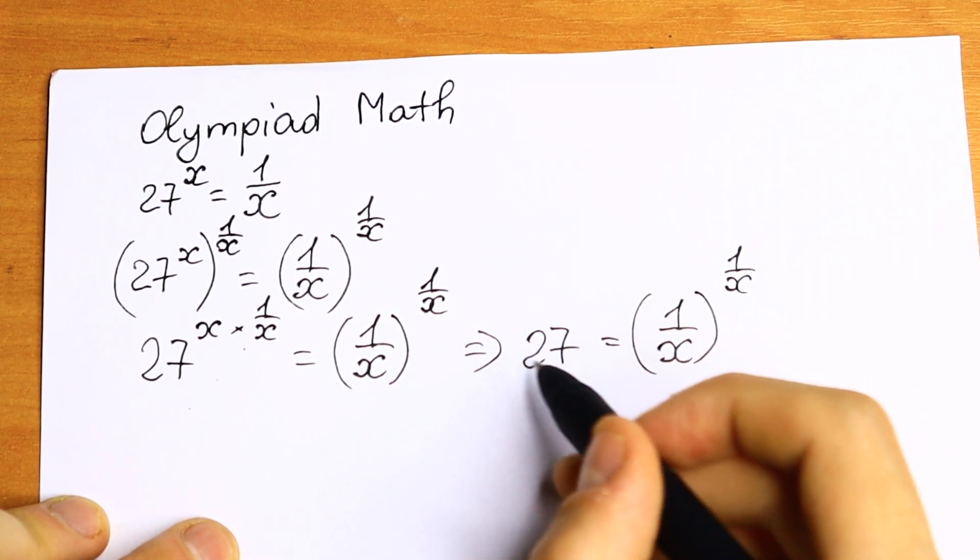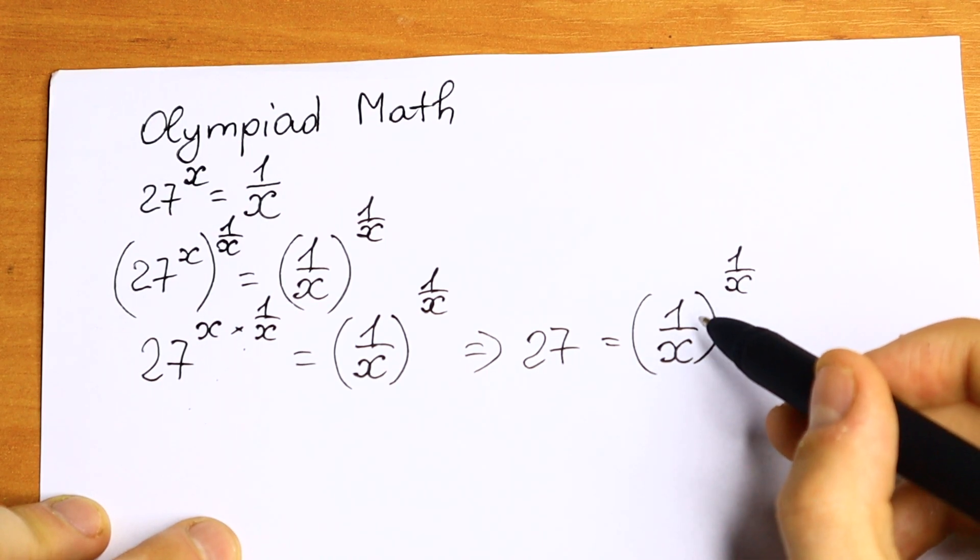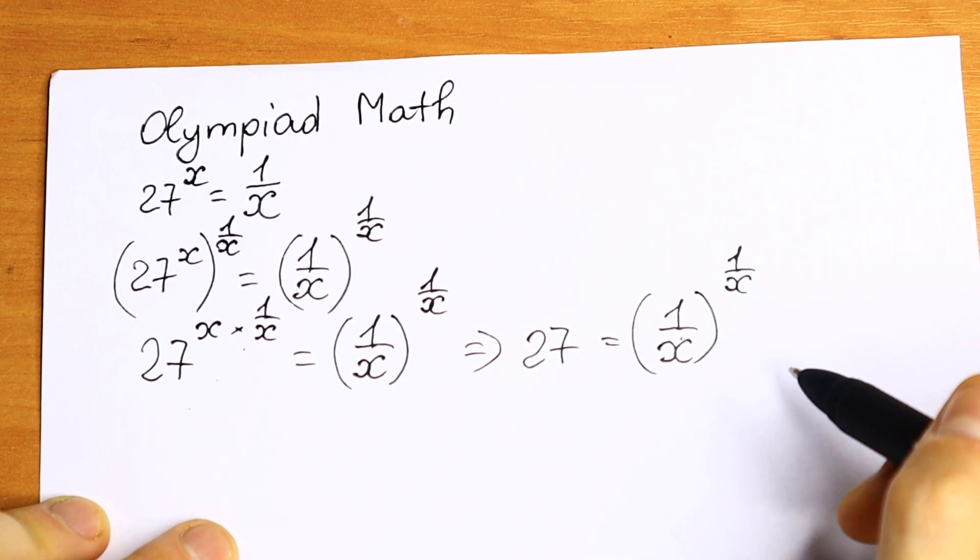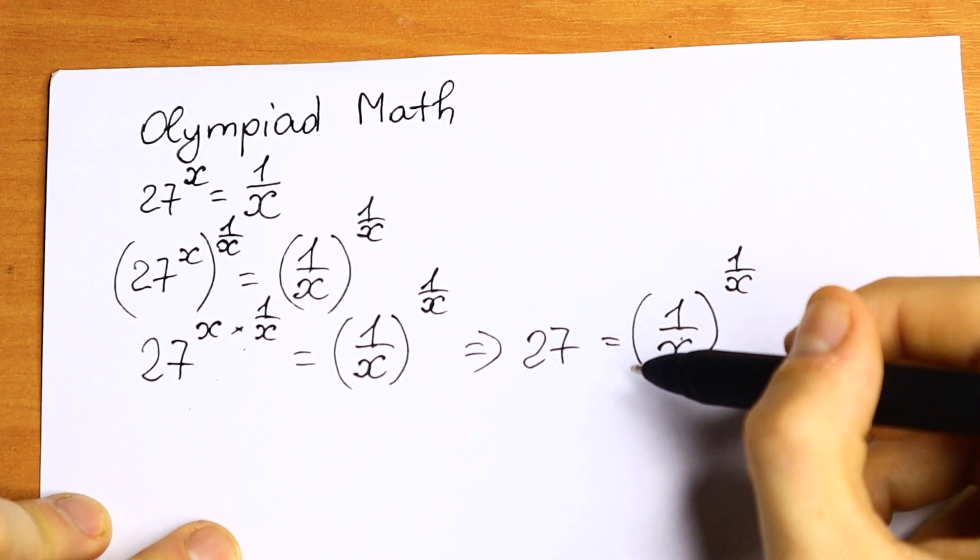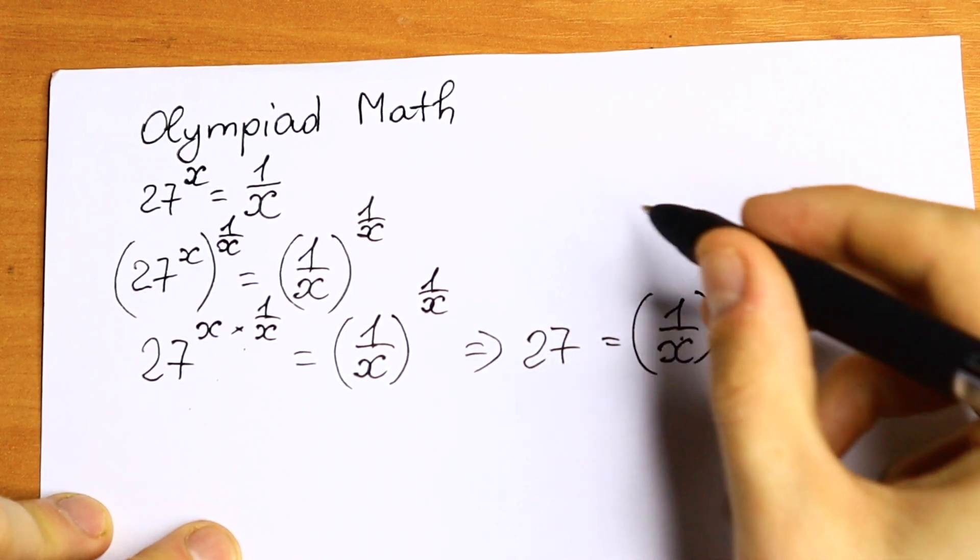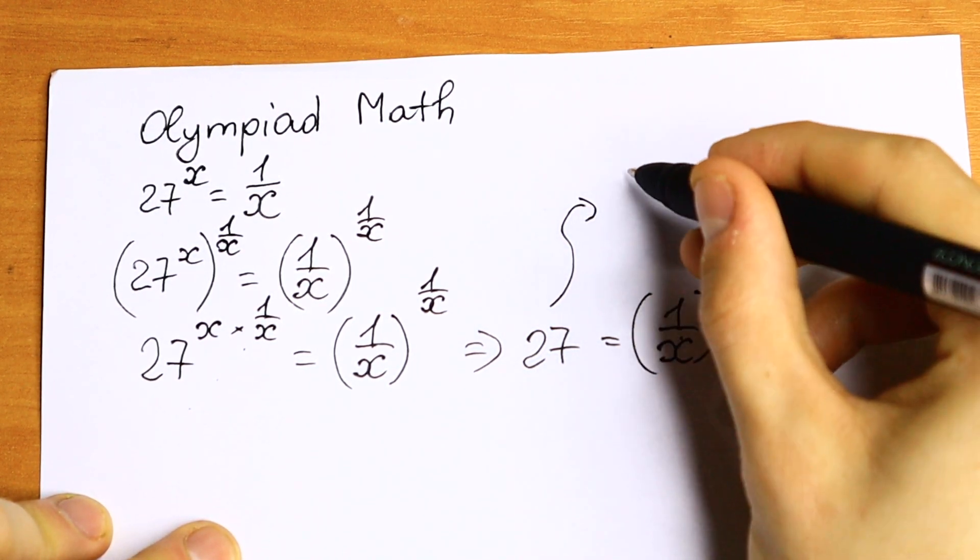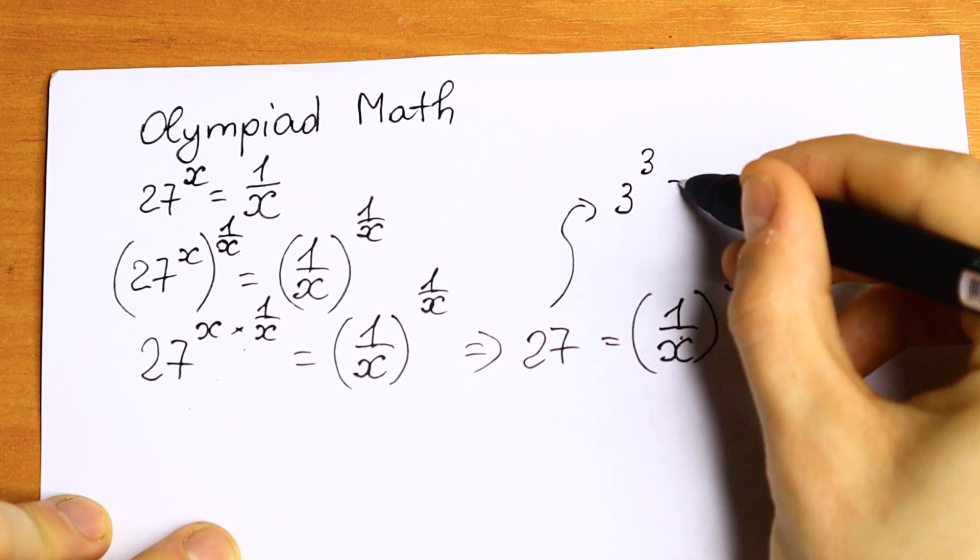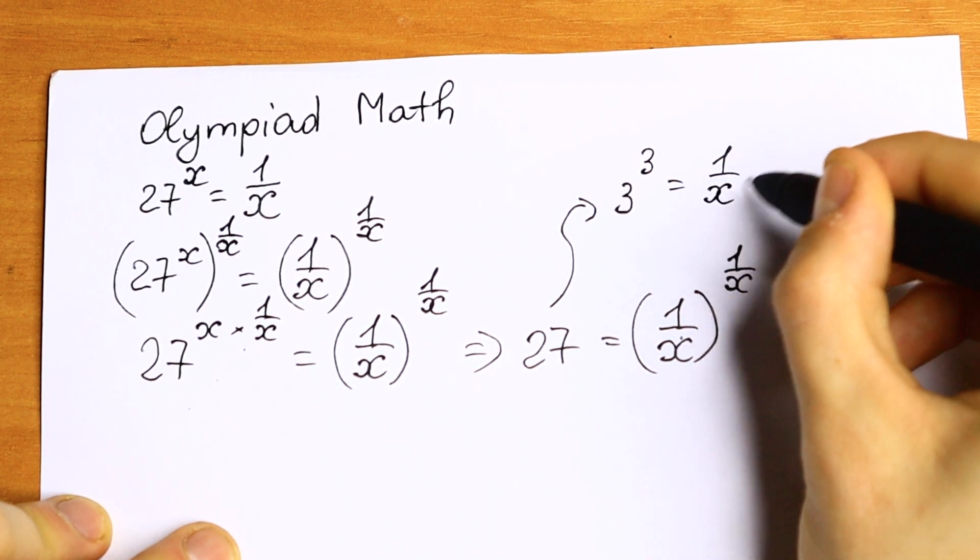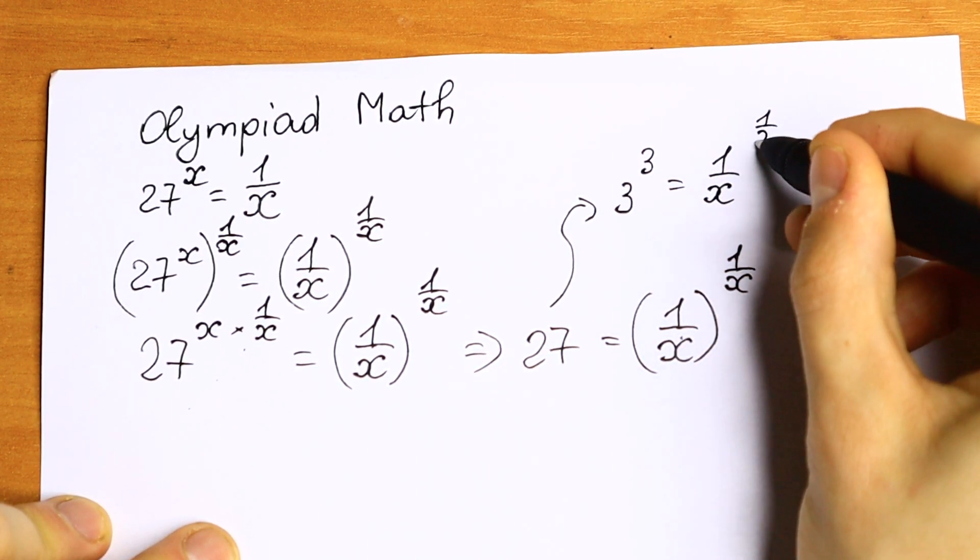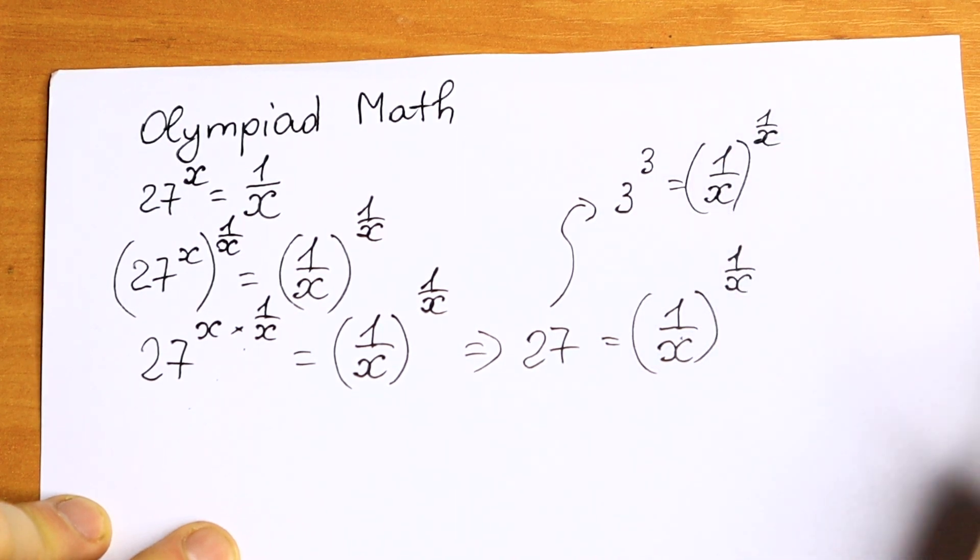So as you can see right here we have some number, and right here we have same base and same exponent. It's not hard to see that this 27 can be written as 3 cube. What we will have? As a result we will have 3 cube equal to 1 over x to the power 1 over x.